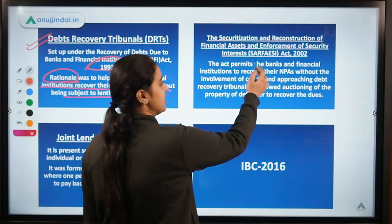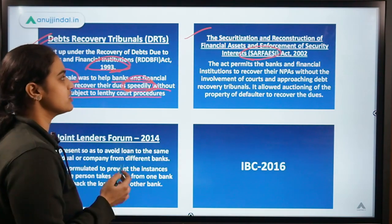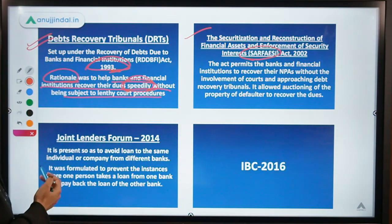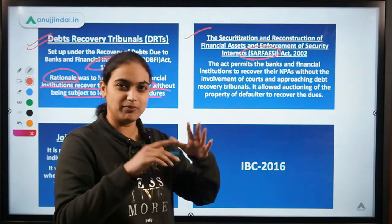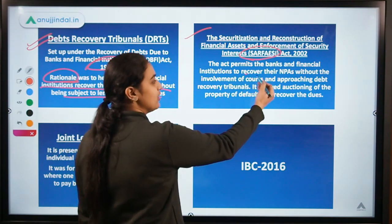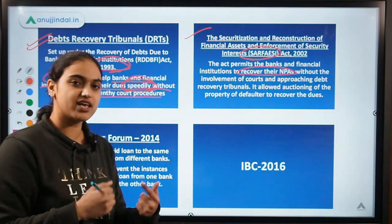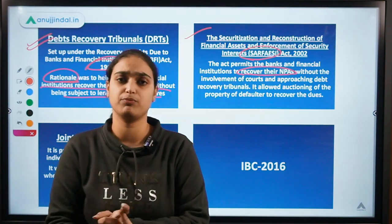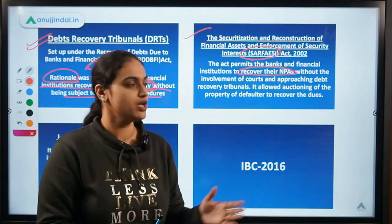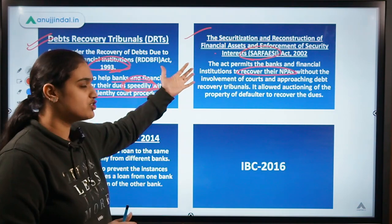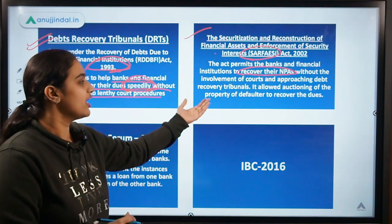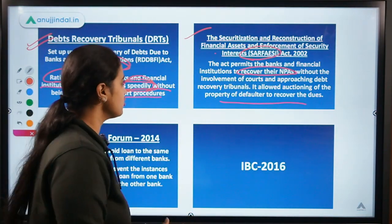Second, the SARFAESI Act — Securitisation and Reconstruction of Financial Assets and Enforcement of Security Interests. It is also a step taken to help recover NPAs. Under this act, you don't need to approach the debt recovery tribunals or courts. It gives certain privileges to banks and financial institutions to recover the amount — they can auction the property or collateral in order to recover the dues, among other things.